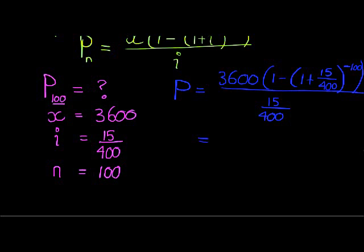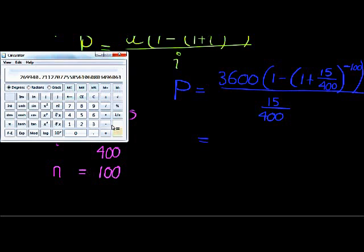Let's go calculate. We've got 3,600 times with the top bracket is 1 minus, and then another bracket (1 + 15 over 400), close that bracket, close that bracket, to the power of 100.